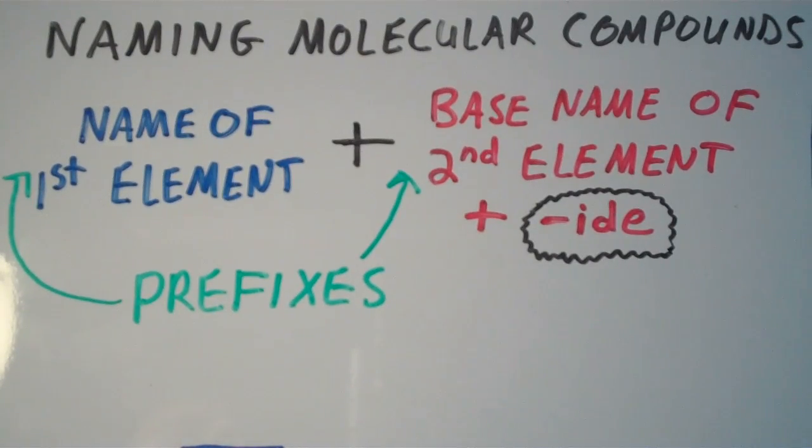Recall that for a molecular compound we have two nonmetals. If you're looking at a compound and you wanted to determine whether it's ionic or molecular, if you don't have any metals in there, generally that means you have a molecular compound.